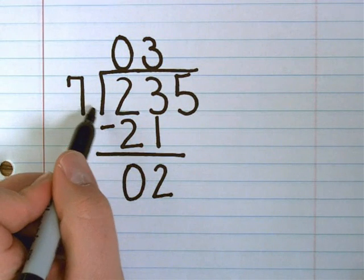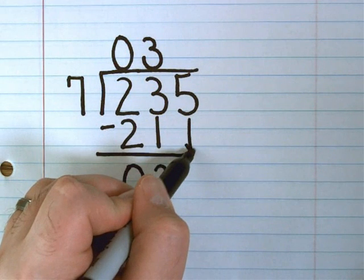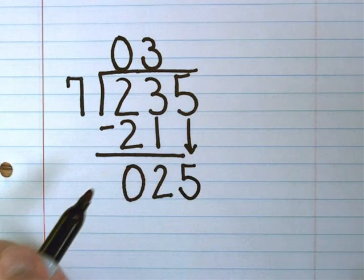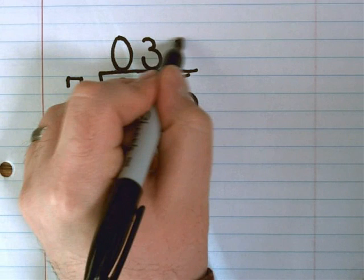So, now is when I bring down the 5. It makes the number 25, and I repeat the process again. How many groups of 7 will go into 25? Well, again, it's 3, because 28 would be too much if I did it 4 times.